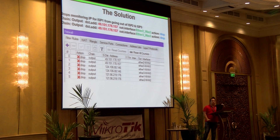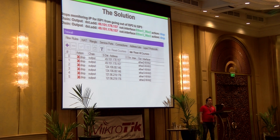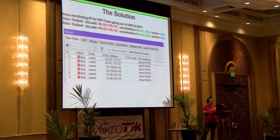These are all the rules created on the firewall filter. You have six rules — two per public IP. Now we are assured that whenever 49 is unpingable, ISP1 is down; whenever 124 is unpingable, ISP2 is down; whenever 121 is unpingable, ISP3 is down.